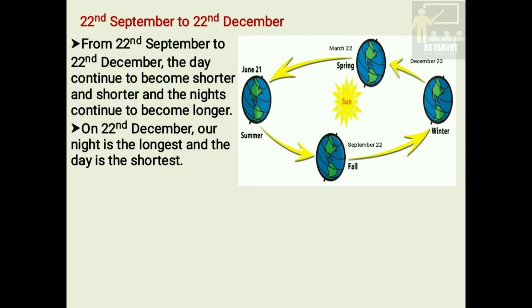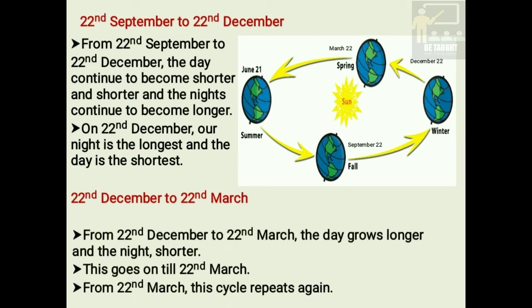We shall learn the duration from 22nd December to 22nd March. From 22nd December to 22nd March, the day grows longer and the night shorter. This goes on till 22nd March, from which this cycle repeats again.